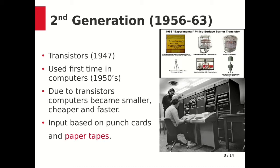Transistors also produced a large amount of heat, which could damage the computer, but compared to the previous generation there was a lot of improvement in the cooling system. The input was still based on punch cards and paper tapes, and outputs were displayed on printouts, similar to the first generation.